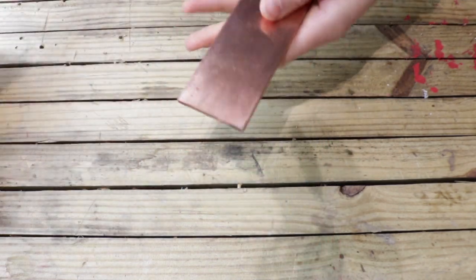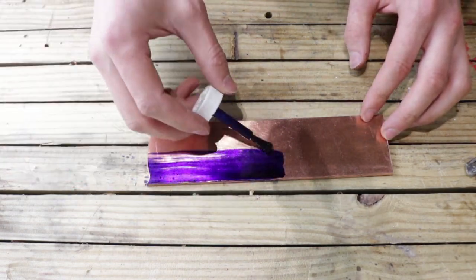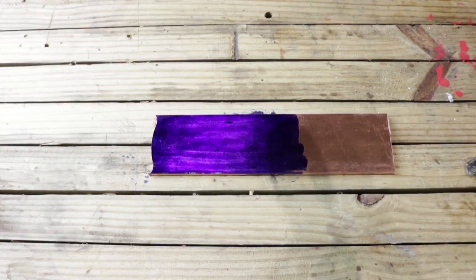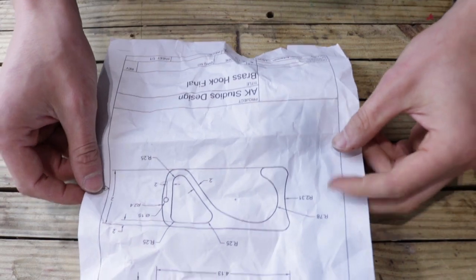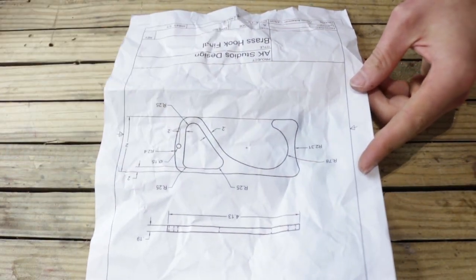So we're starting off here by cleaning our copper stock, making sure it's free of dirt and oil, which will help our layout fluid adhere well. This layout fluid is gonna allow our scribe marks to stand out. Next, we're gonna print out our drawings provided to you for free at full scale and simply scribe them into the copper.